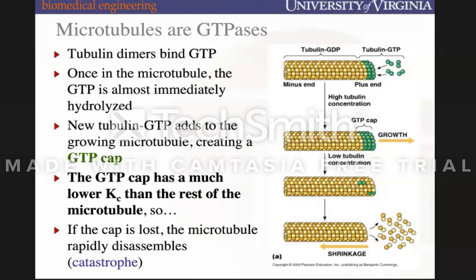Phosphate groups are constantly recycled. After disassembly occurs, GDP will be shuttled off because tubulin is an enzyme whose substrate is GTP — it doesn't want to remain bound to GDP. That GDP will, through other proteins, receive back the phosphate group and become GTP again. Once it becomes GTP, another tubulin dimer will want to bind to it and facilitate polymerization again. So even though it has a catastrophic disassembly, there's turnover of this process.